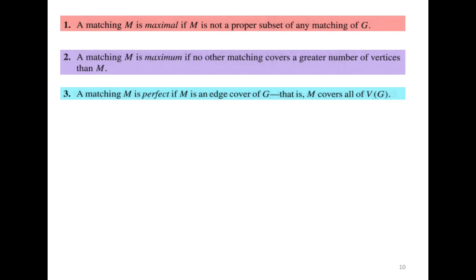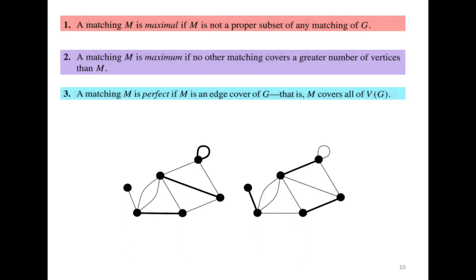Perfect matching covers all vertices with no unmatched vertex. Consider two graphs and identify whether the given subgraph is a matching, and if so, whether it is maximal, maximum, or perfect. The first graph is not a matching because of the presence of a loop — a loop has a common endpoint, violating the matching condition. The second graph is a matching which is maximal, perfect, and maximum.